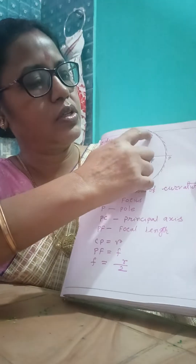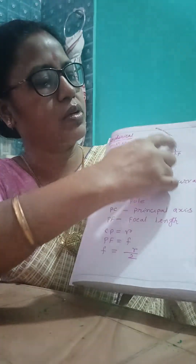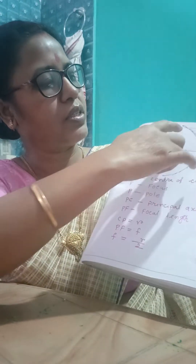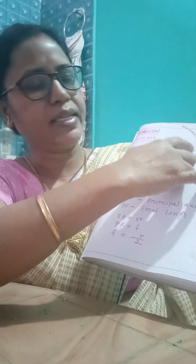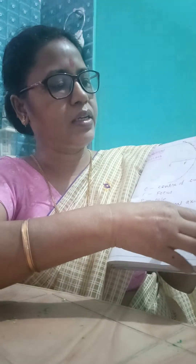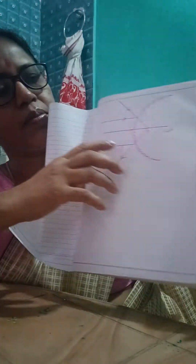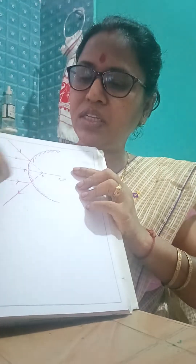One is Concave Mirror — the reflecting surface is on the inside. And another is Convex Mirror — the reflecting surface is on the outside.